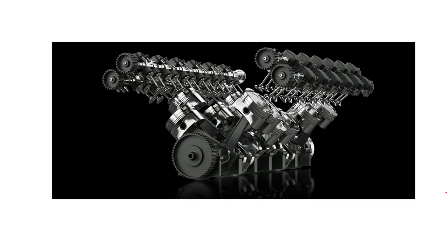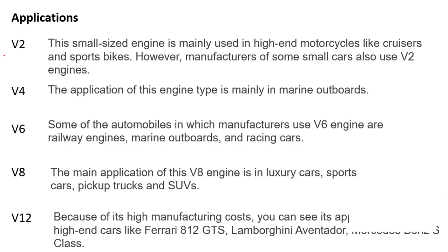The applications of V engines: V2 means there are two IC engines. This small-sized engine is mainly used in high-end motorcycles like cruisers and sports bikes. However, manufacturers of small cars also use V2 engines. V2 is suitable for motorcycles; you can see some high-end motorcycles use V2.